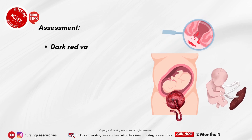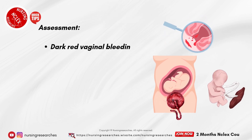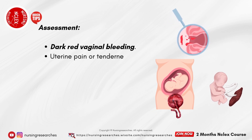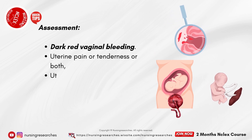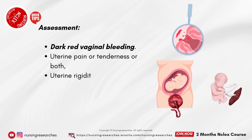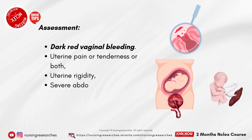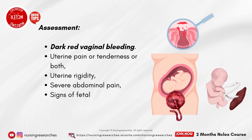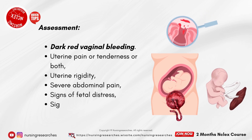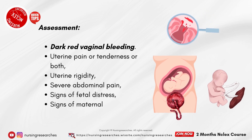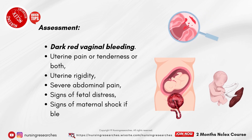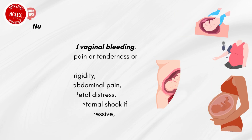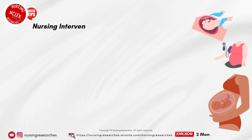Assessment: dark red vaginal bleeding, uterine pain or tenderness or both, uterine rigidity, severe abdominal pain, signs of fetal distress, and signs of maternal shock if bleeding is excessive.